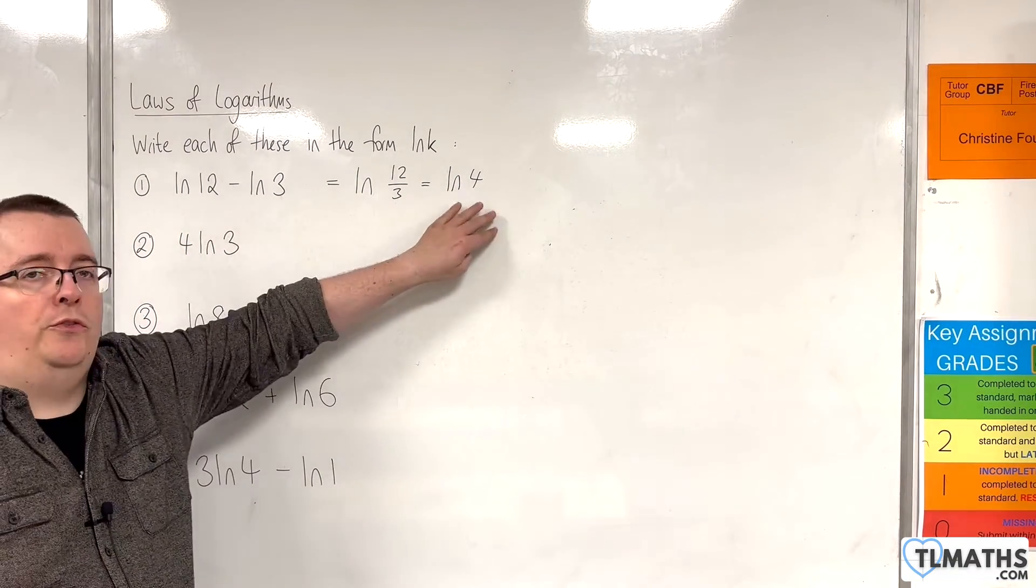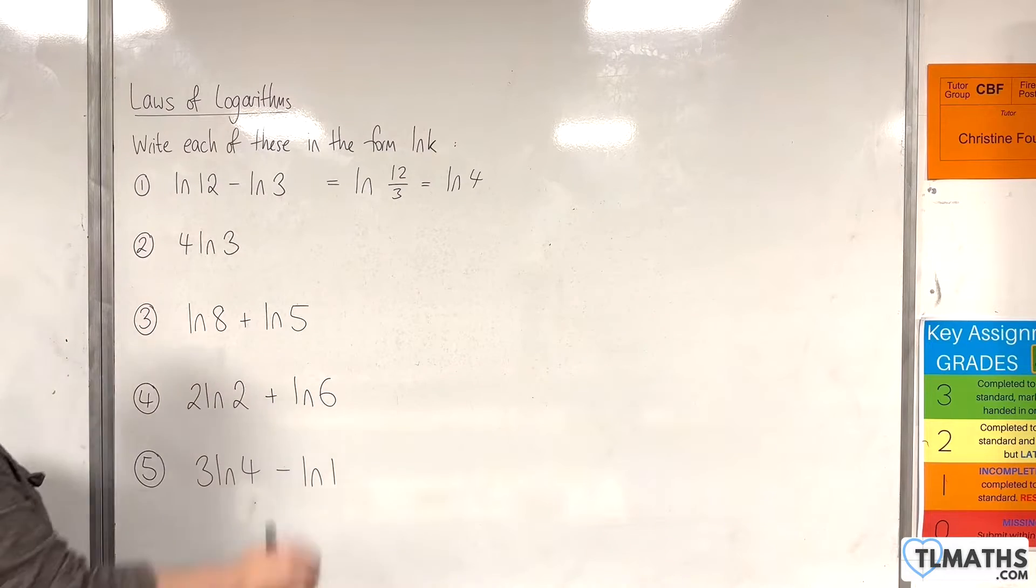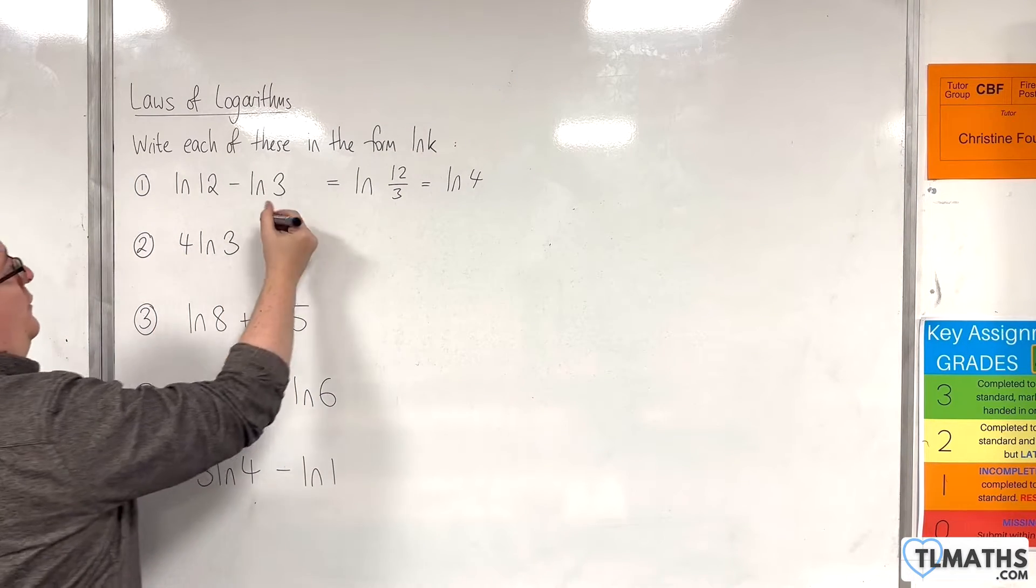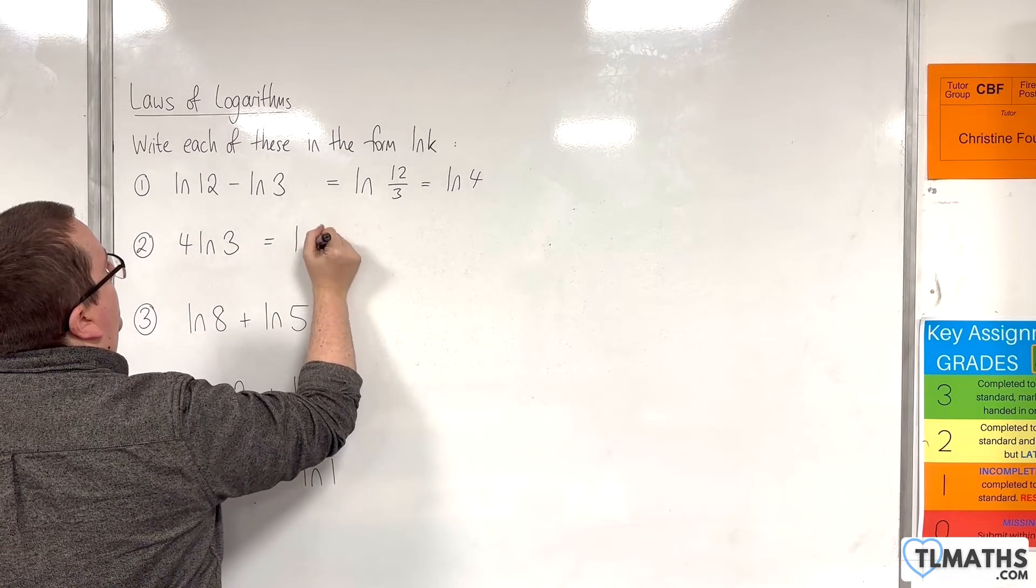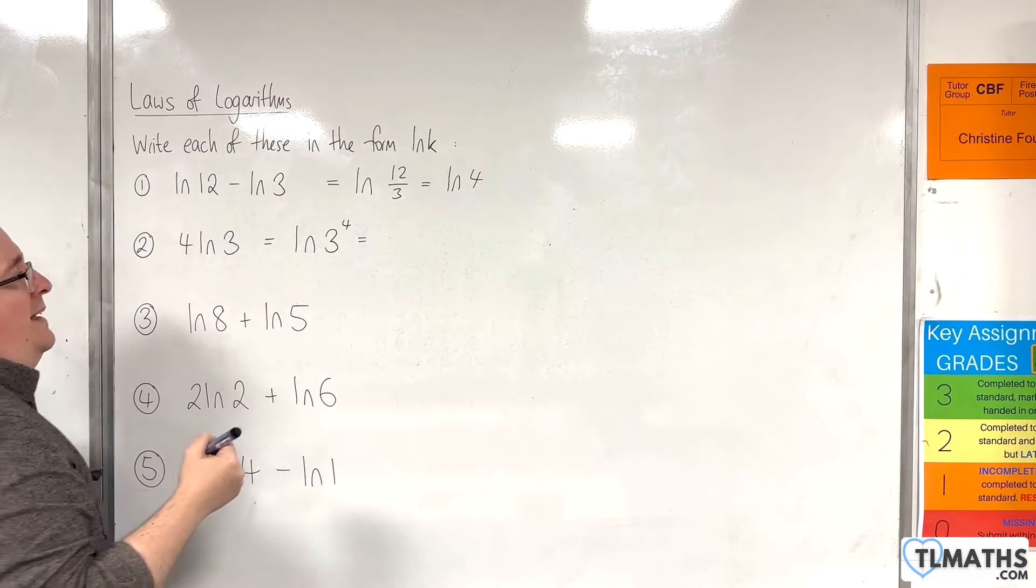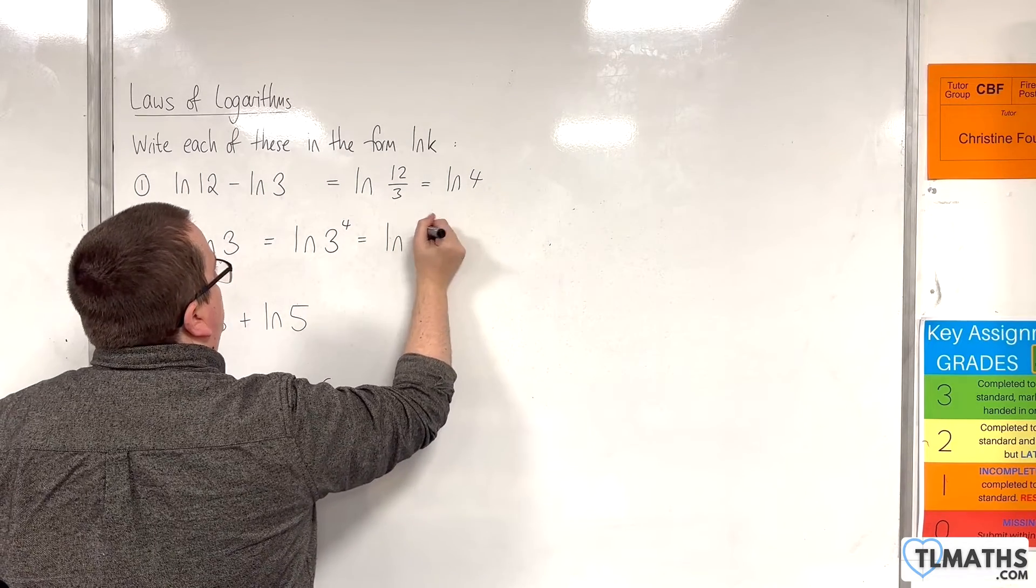For the second one we have 4 times the natural log of 3. Using the power rule we can write that as the natural log of 3 to the power of 4, and 3 to the power of 4 is 81, so that's the natural log of 81.